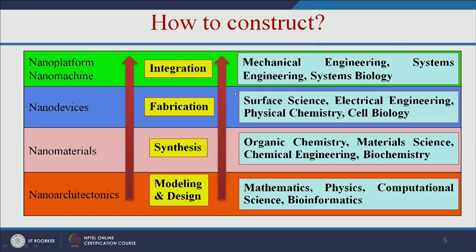So how do we construct these nanomachines? The first step is modeling and design, which comes under nano-architronics, and these are the fields contributing to this. For synthesis of nanomaterials, mainly chemistry and biochemistry contribute. The next step is fabrication, where cell biology and other fields contribute. And finally, you have to integrate and make the complete nanomachine.